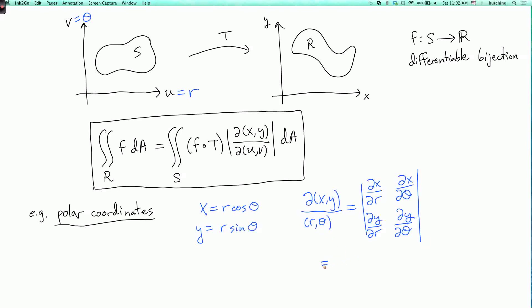This is the determinant of: dx/dr is cosine theta, dx/d theta is minus R sine theta, dy/dr is sine theta, and dy/d theta is R cosine theta.